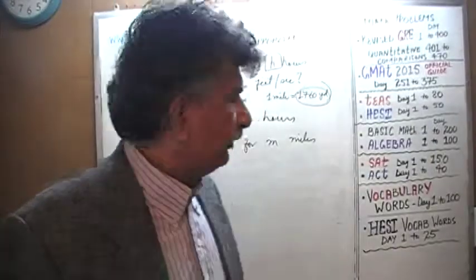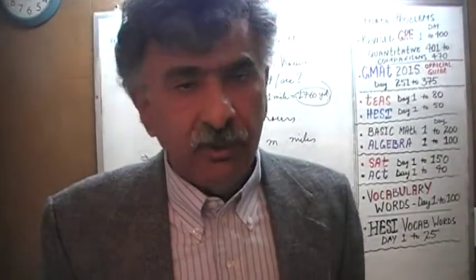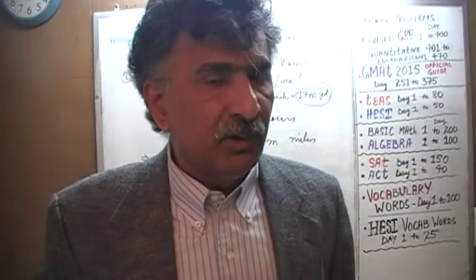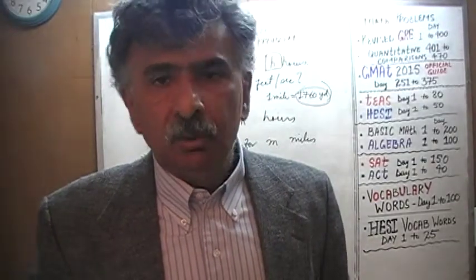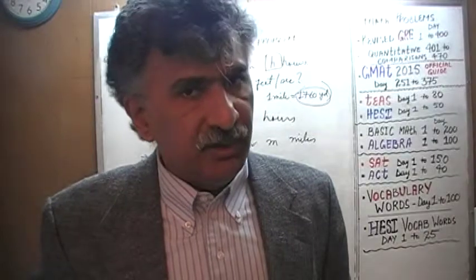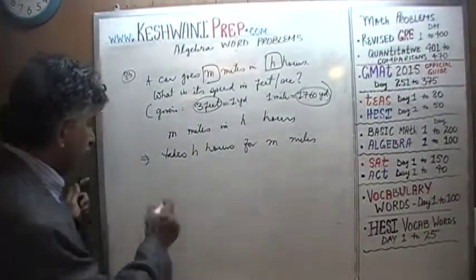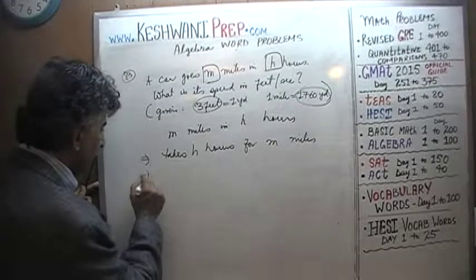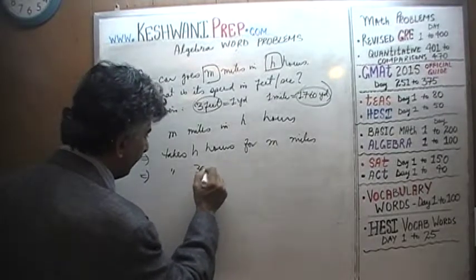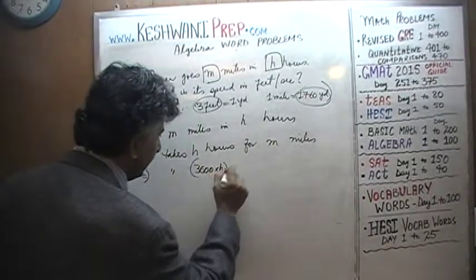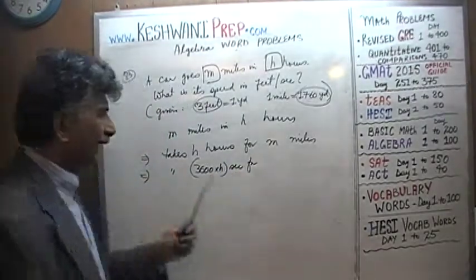We know one hour consists of 3600 seconds. If one hour is made up of 3600 seconds, two hours will be twice as much and three hours will have three times as many seconds. Therefore, h hours will have 3600 times h seconds. That is how long we take for m miles.